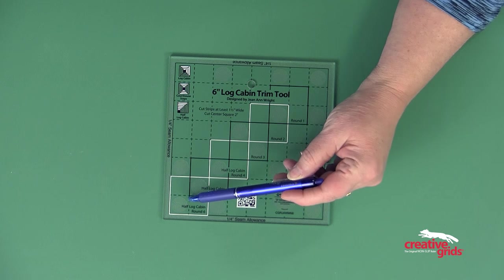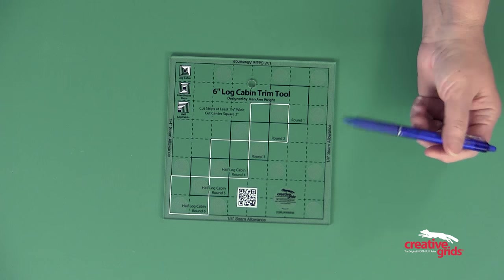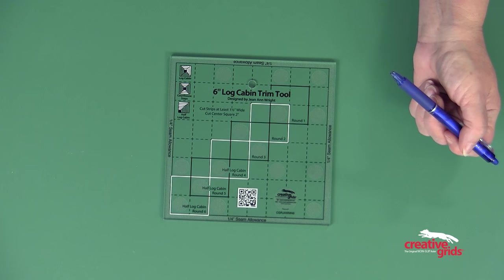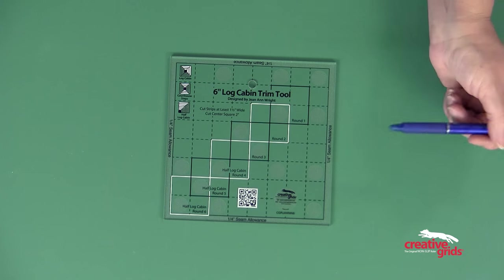There are also nested squares going down the center of the tool, and you place these over the center square in the log cabin to trim up each round as you add the logs.